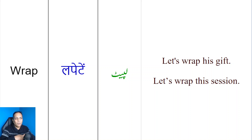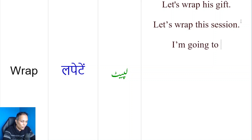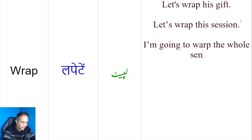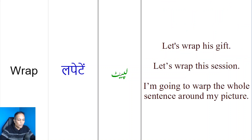Jaise hum ne koi text likha ya picture likhi, toh main kehta hoon, 'Wrap this text around this picture.' Jaise main kehta hoon, 'I am going to wrap the whole sentence around my picture.' Yeh jitna bhi poora sentence hai, yeh main apni picture ke irgird wrap kar doon ga. 'I am going to wrap the whole sentence around my picture.'